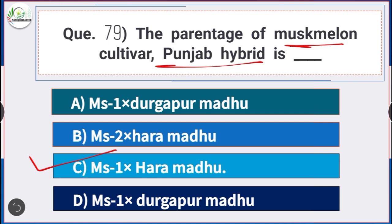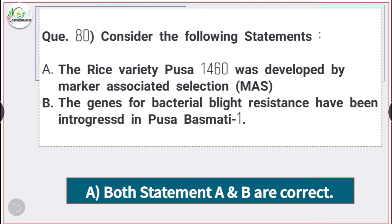Question number 80: Consider the following statements. Statement A: The rice variety Pusa 1460 was developed by marker-assisted selection. Statement B: The genes for bacterial blight resistance have been introgressed in basmati rice Pusa Basmati 1. Both statements A and B are correct.